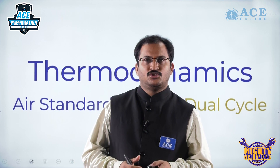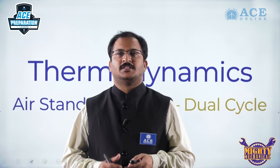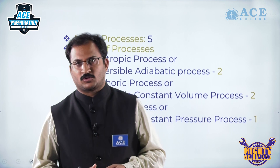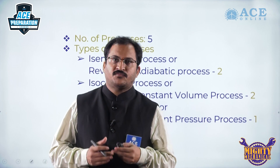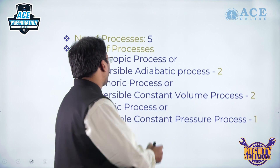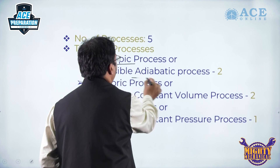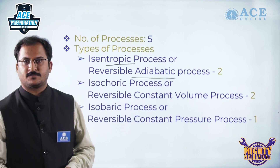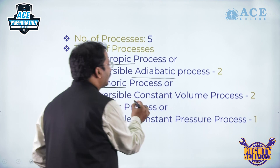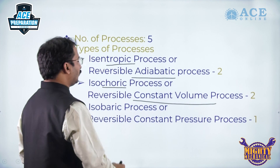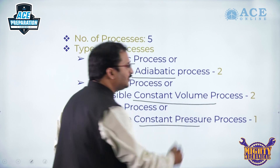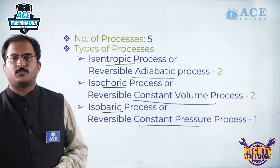When it comes to this dual cycle, there are five different processes that we come across. Out of these five processes, two are isentropic processes or reversible adiabatic processes, two are isochoric processes or reversible constant volume processes, and one is an isobaric process or reversible constant pressure process.